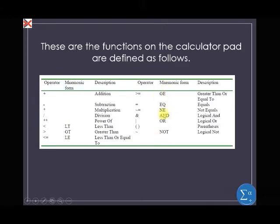Look at the mnemonic forms available here: GE (greater than or equal), EQ (equal), NE (not equal), AND (logical and), OR (logical or), and NOT (logical not). These are reserved functions, which is why you cannot use these names to define a variable.